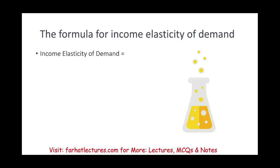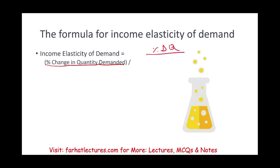The formula is the percentage change in quantity demanded divided by the percentage change in income. This should not be a surprising formula — if we looked at price elasticity of demand or of supply, it's a very similar formula. Same thing with cross-elasticity. Remember, the quantity is always in the numerator.